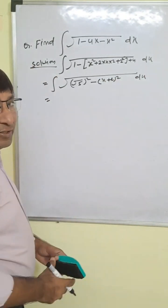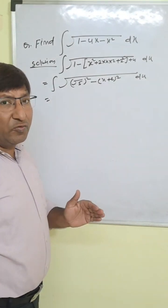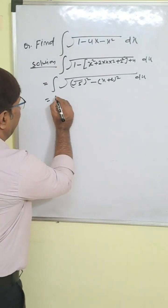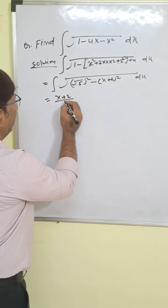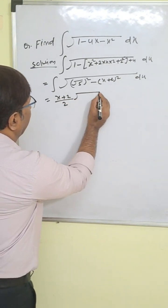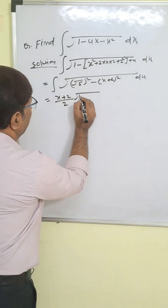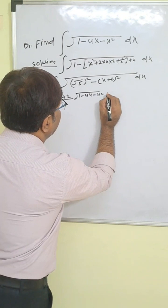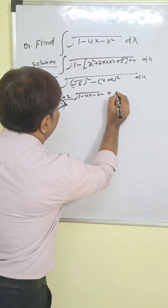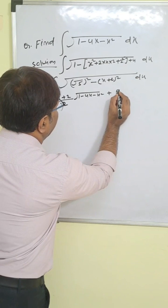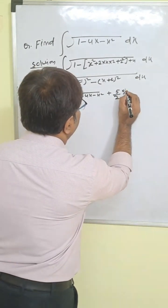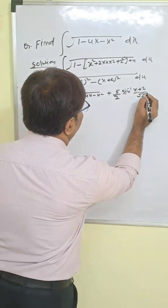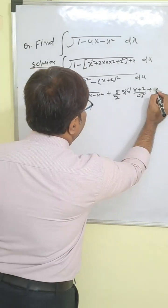Now the formula for integration of root under a square minus x square is: x by 2 times root under a square minus x square. Here x is replaced by x plus 2. So that is x plus 2 by 2 times root under 1 minus 4x minus x square, and then plus a square by 2, which gives us 5 by 2. And then sin inverse of x by a, where a is root 5, so sin inverse of x plus 2 by root 5, plus C. This is our correct answer.